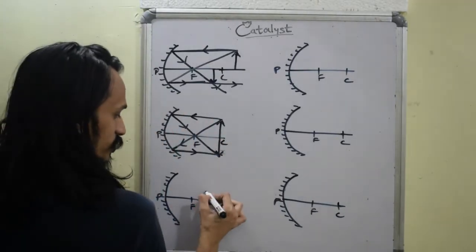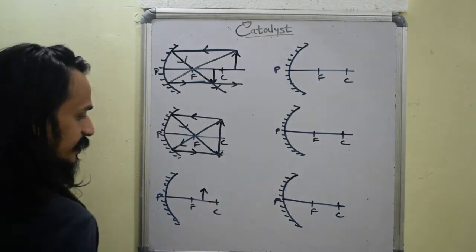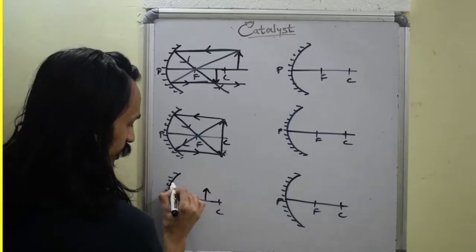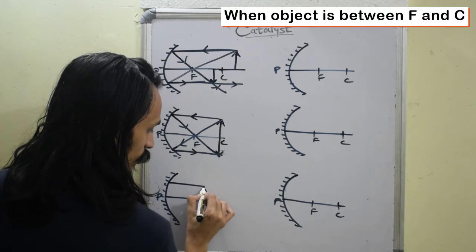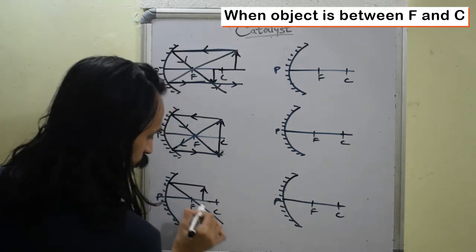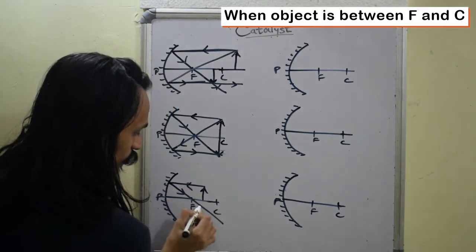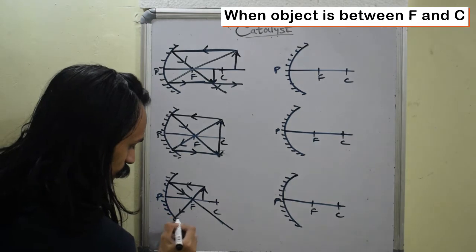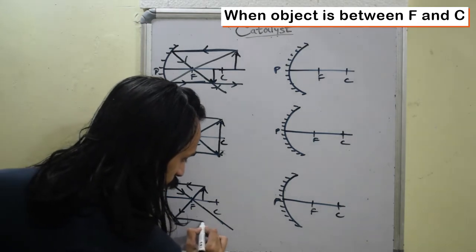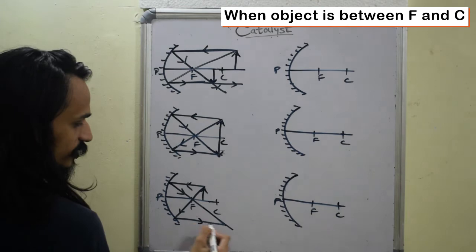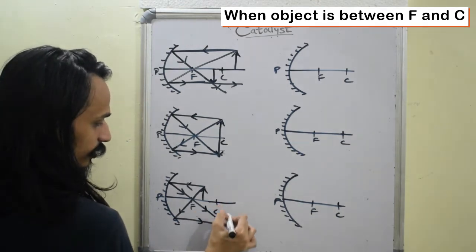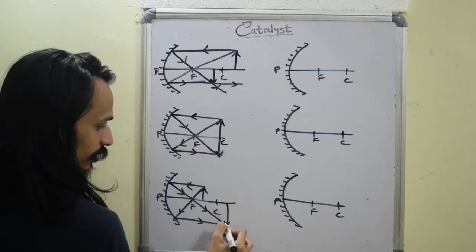Now I'm going to move the object a little closer. I'm going to put it between F and C. Again, I will use rule one that tells me parallel and through focus. Then I will use rule two: through focus and then becomes parallel. You will notice that they meet over here. So if I draw this over here, the head, the base will be right up top.